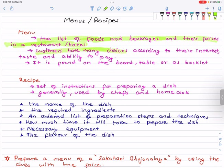Customers have many choices according to their interest, taste, and ability to pay. Customers have different choices according to their preference, taste, and ability to pay. That is the menu. It is found on the board, table, or as booklet.